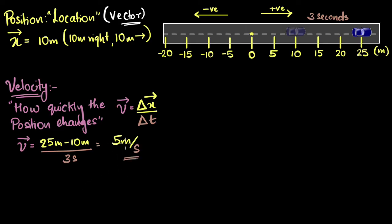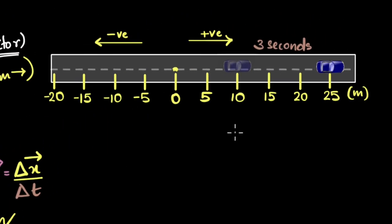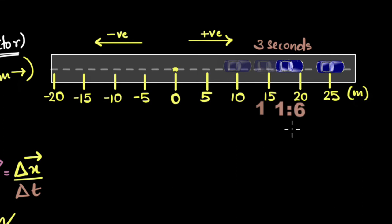We see a positive sign, which means the velocity is to the right — and that makes sense, because the position has changed to the right side. Velocity is also a vector quantity because position is a vector quantity. The sign tells you which direction the position has changed. Five meters per second means that if the car was traveling at a constant rate, it would change its position five meters to the right every second. In the first second it changed by five, in the next second by five again, and in the last second by five meters to the right.